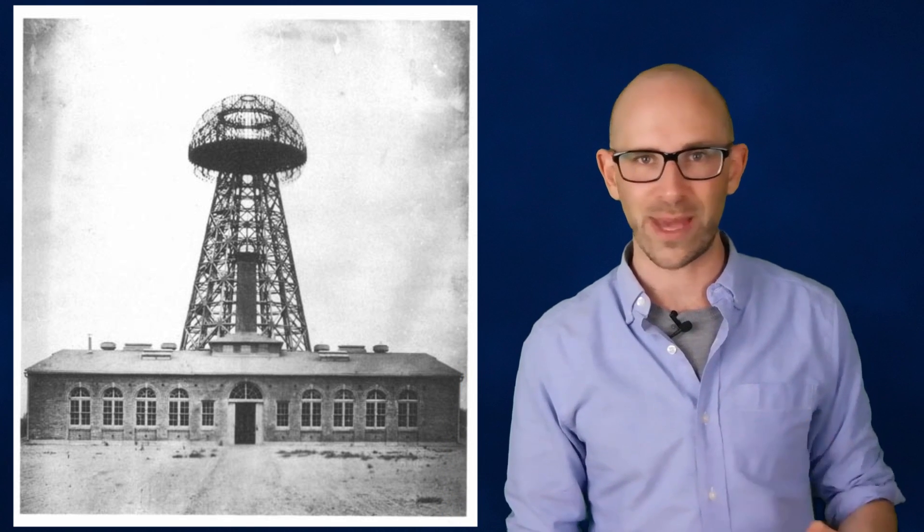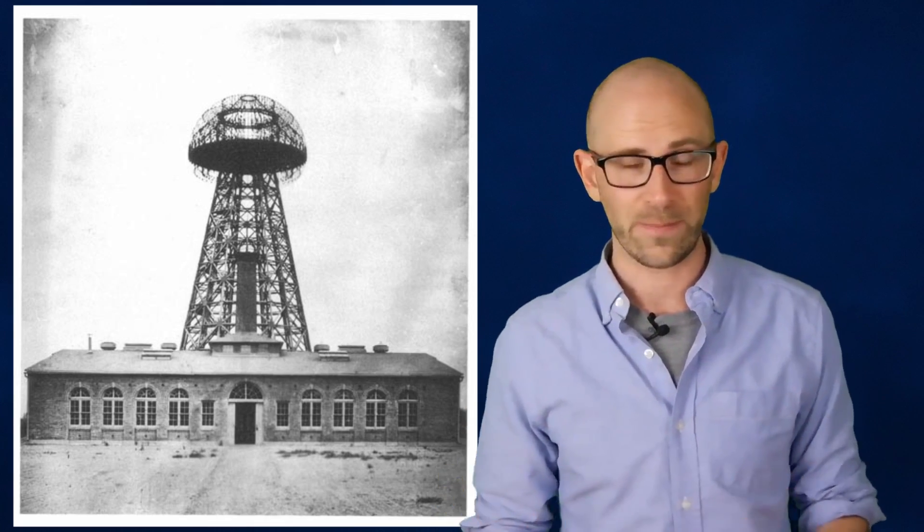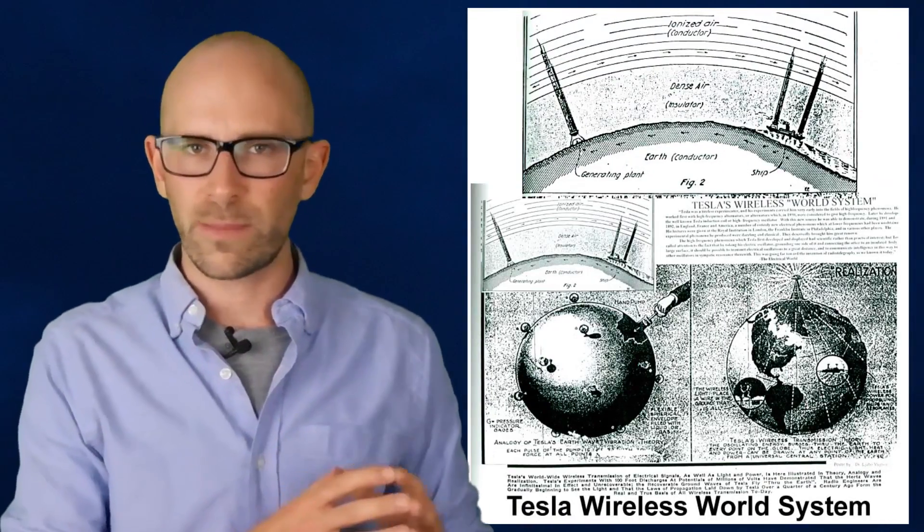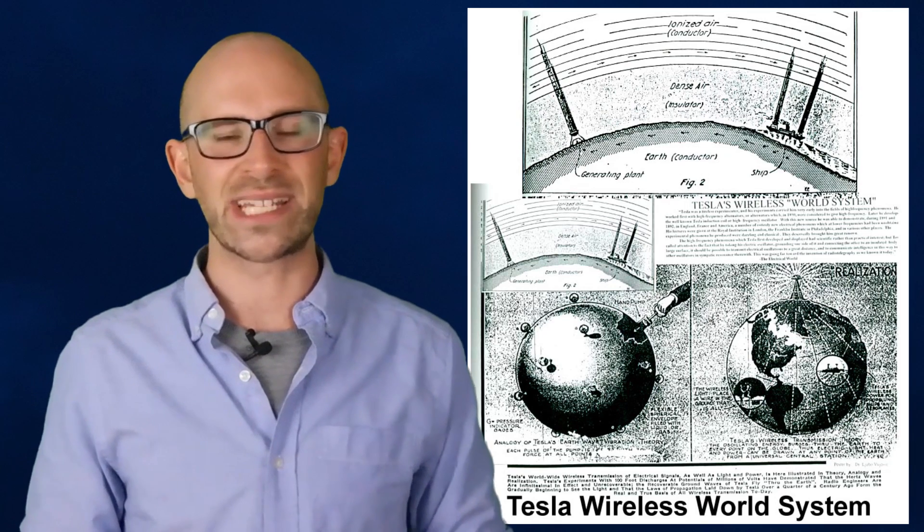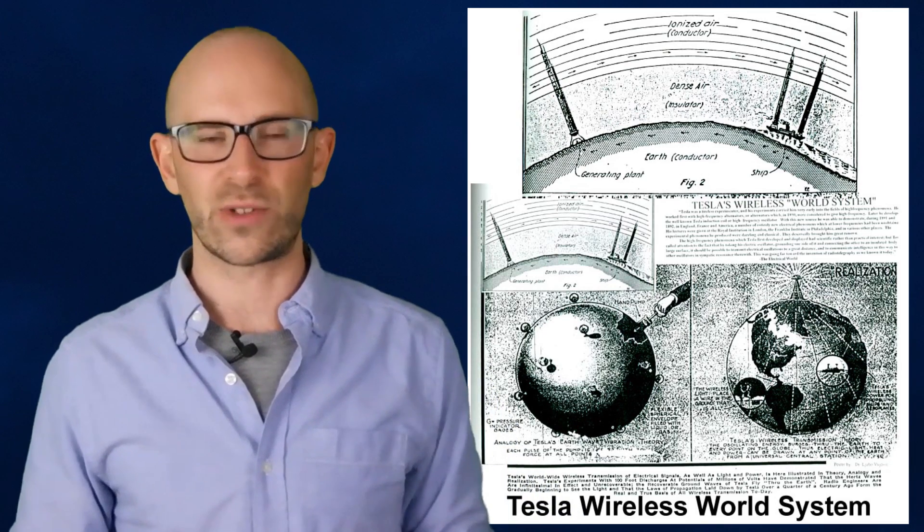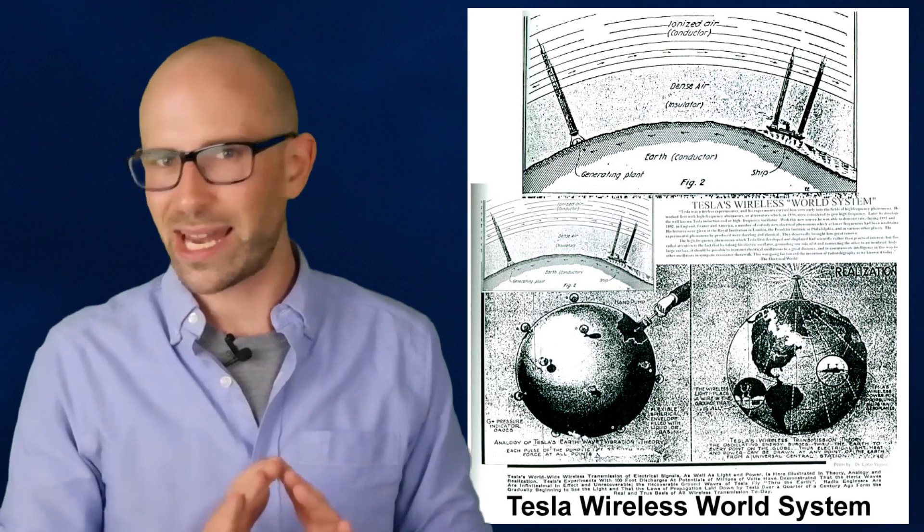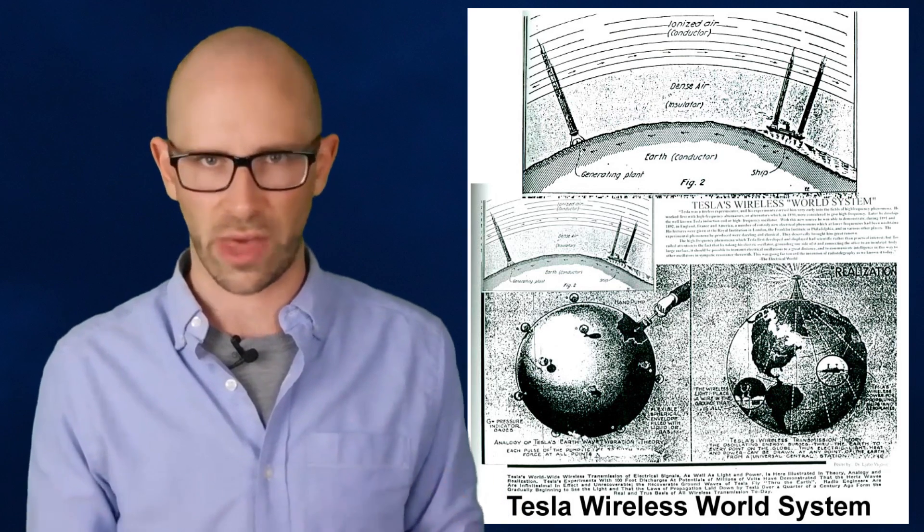Atop this tower was a 55-ton dome of conductive metals, which continued down the tower and then 300 feet into the ground itself. His aim was to use both the planet itself and the overhead ionosphere as huge electrical conductors, transporting electricity wirelessly anywhere on the face of the Earth.